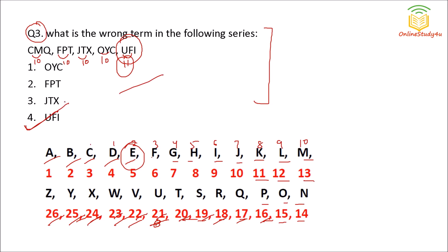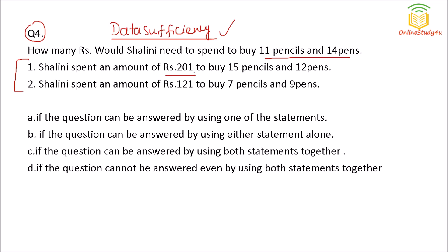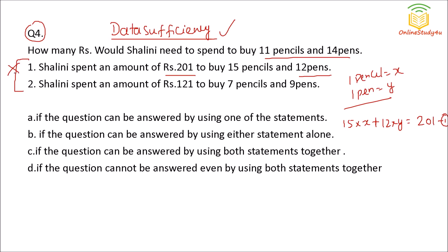Question number four is a data sufficiency problem. How many rupees would Salini need to spend to buy 11 pencils and 14 pens? Statement one: Salini spent 201 rupees to buy 15 pencils and 12 pens. Let one pencil cost x rupees and one pen cost y rupees. So 15x + 12y = 201. This is one equation with two unknowns, so from statement one alone we cannot get the answer.